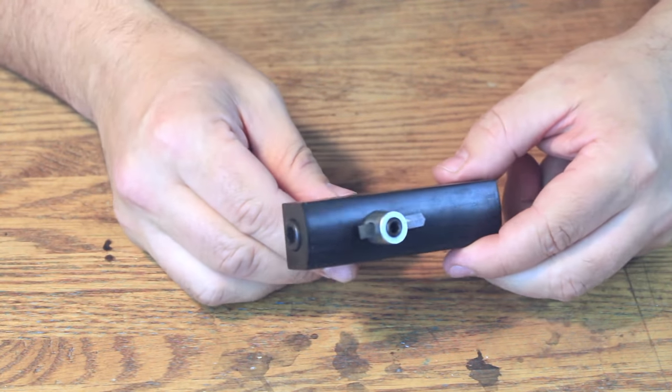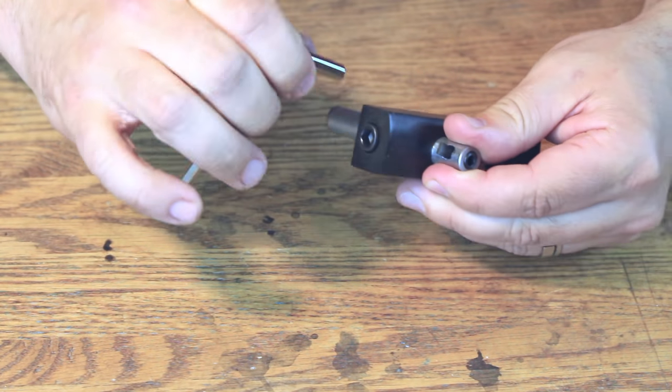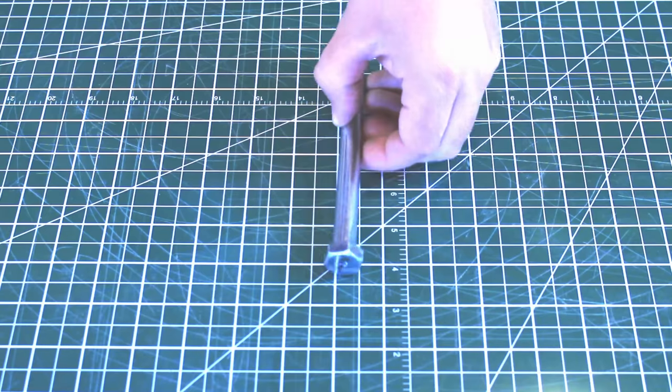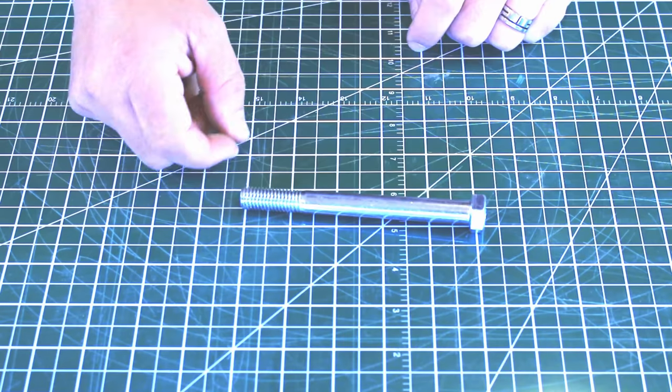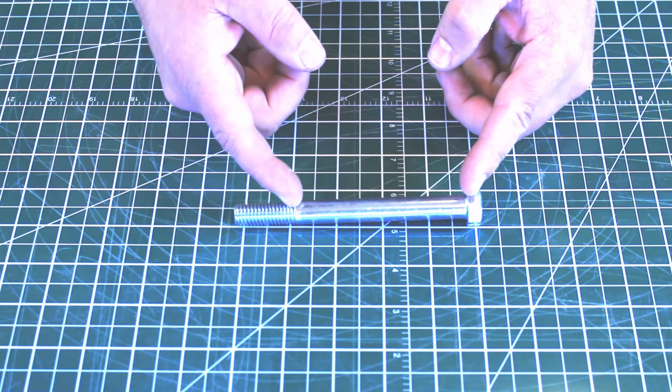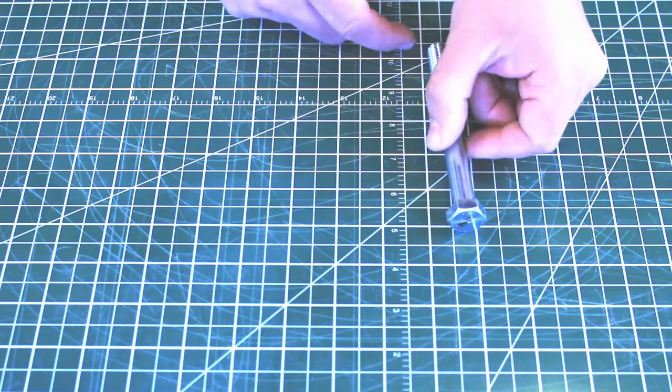So without any further ado, we're going to get started on this build. So what are you going to need for this build? Well, first of all you need a half-inch bolt. This one is a five inch long half-inch bolt, so that gives you roughly four inches of material to work with right here.